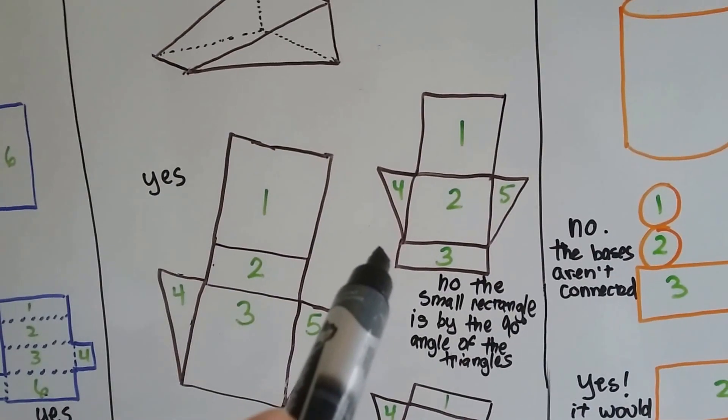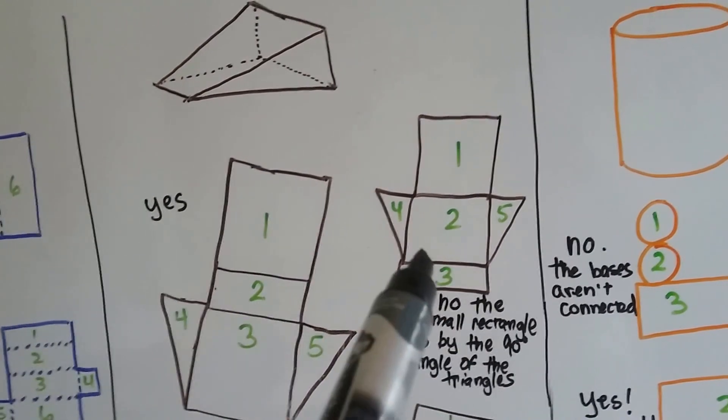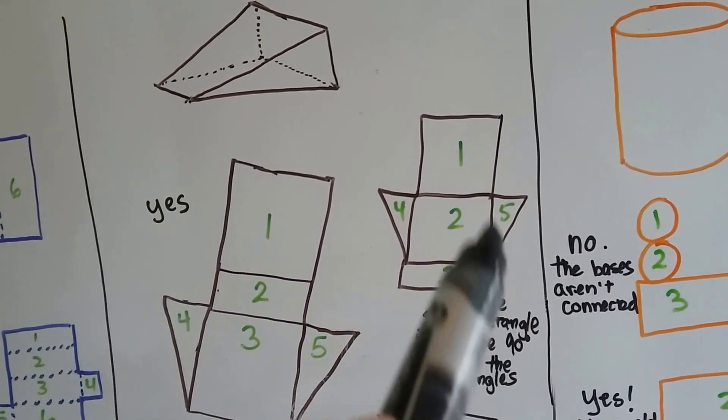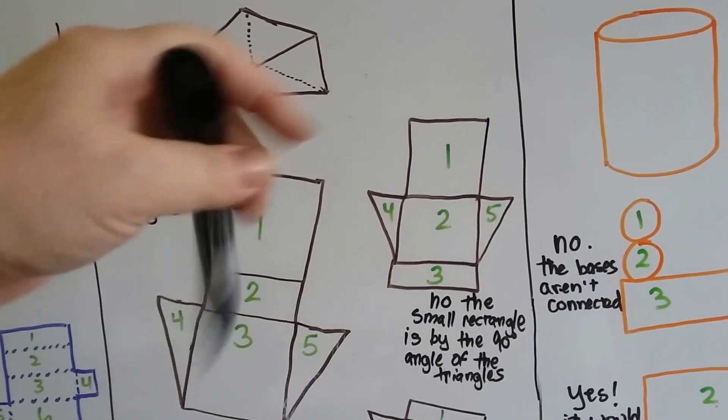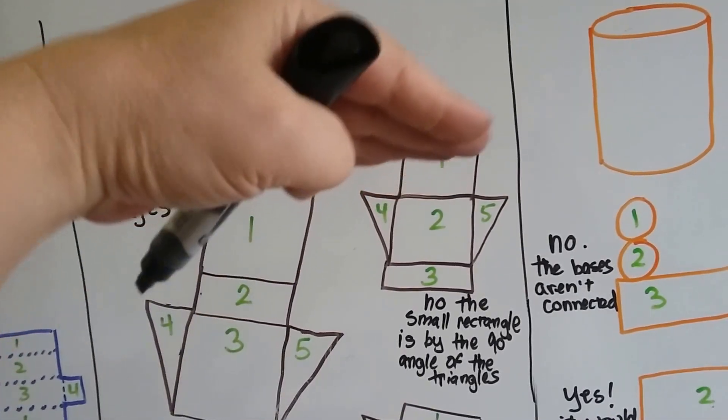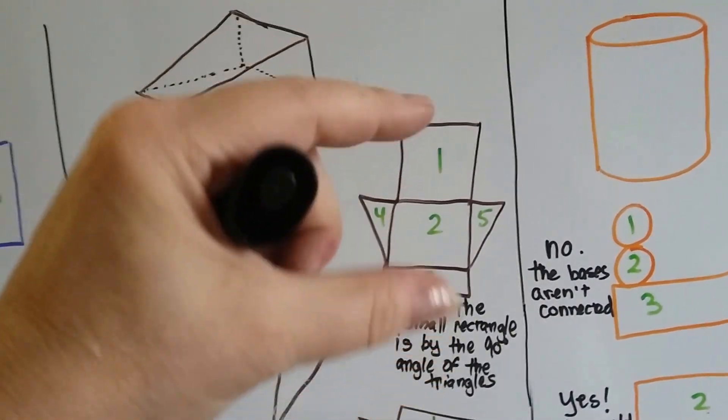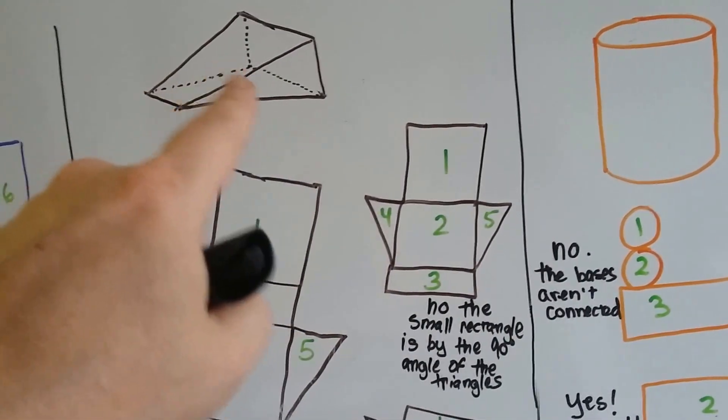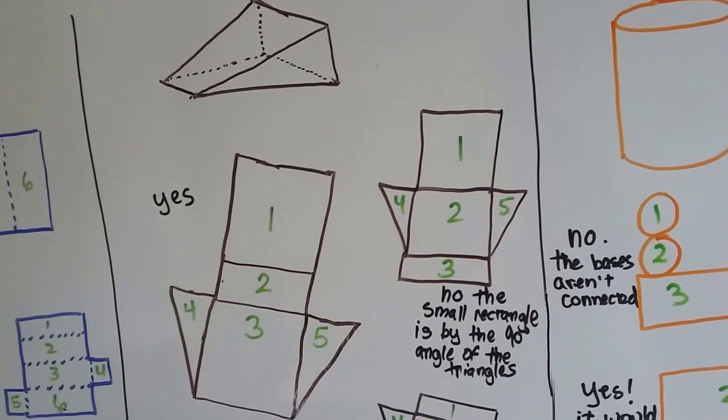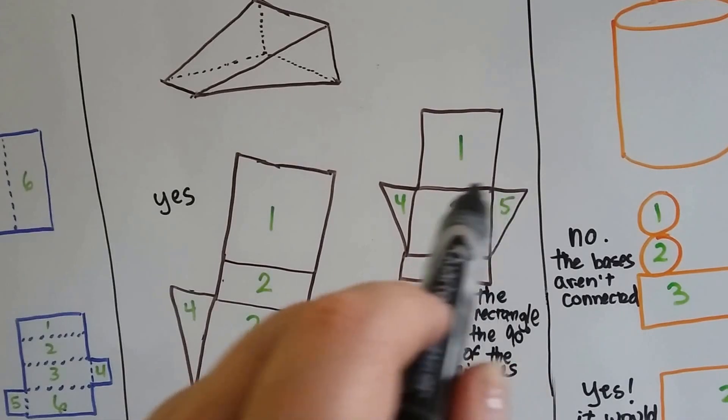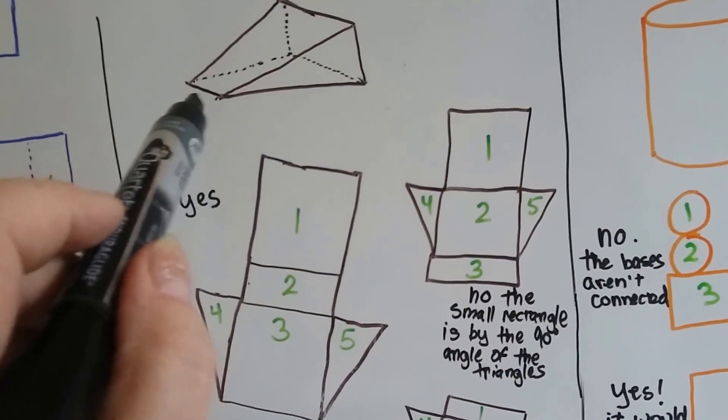But how about this one? Look at where the small rectangle is. Is the small rectangle supposed to be in front of this triangle? So if you folded this one up, what would happen if you folded number 1 straight up and you folded 4 and 5 up? It wouldn't completely close it, would it? It would stay open a little bit. There would be a gap. So no, that one is not correct because the small rectangle is supposed to be on the side of the 90 degree angle here, not in the front.